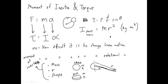If I've got a bunch of point masses around a pivot point, to find the total moment of inertia all I would have to do is add all of them together. I total equals I1 plus I2 plus dot dot dot. Because it's scalar, there's no direction — that's why I can add them all together like that.